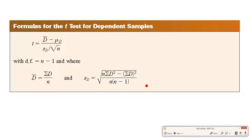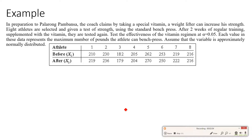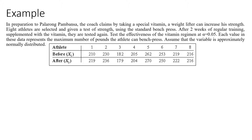Let's have an example. In preparation for the Palarong Pambansa, a coach claims that by taking a special vitamin, a weightlifter can increase his strength. Eight athletes are selected and given a test of strength using the standard bench press. After two weeks of regular training supplemented with the vitamin, they are tested again. Test the effectiveness of the vitamin regimen at alpha equals 0.05.